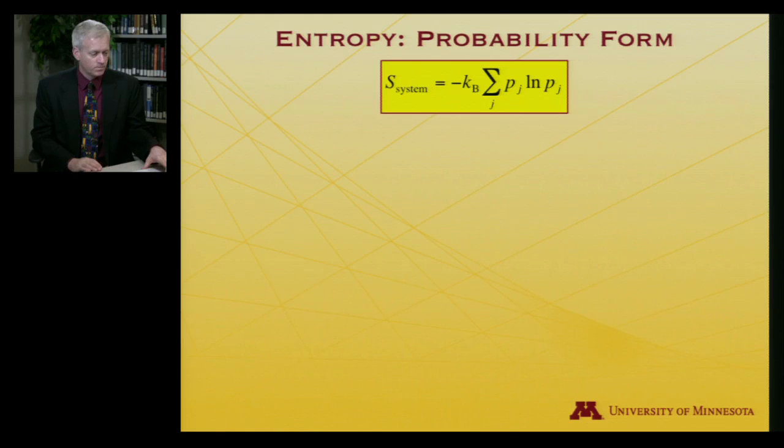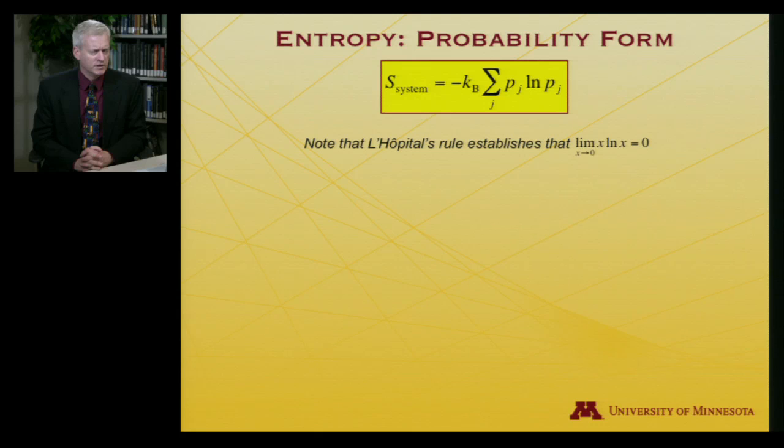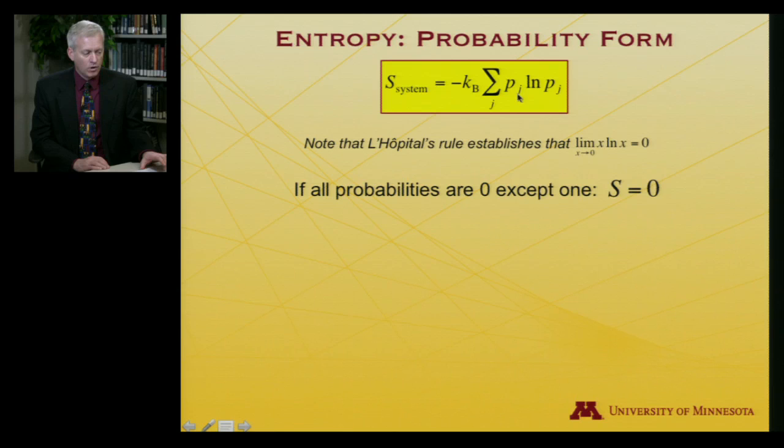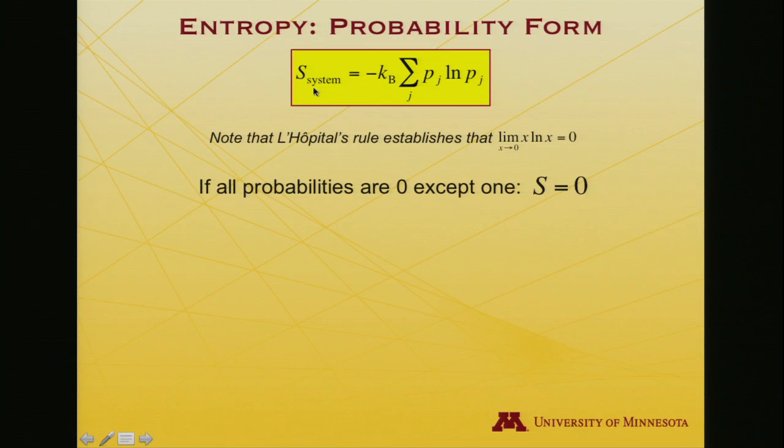If you're worried about the fact that the probability could go to zero, and the log of zero is negative infinity, and that doesn't seem very good, you can actually use L'Hopital's rule to establish that in the limit as x goes to zero, x times log x is equal to zero. It does not go to negative infinity. You'll also see that if all the probabilities are zero, except for one, then for that single one, it'll be one times the log of one. Log of one is zero, so I'll get the entropy is zero. And that's what I expect. There's no disorder if everything is one thing.